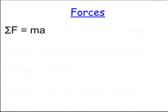That sigma symbol means 'the sum of,' so if we add up all our forces, it is always equal to mass times acceleration. One force that we have on every single object is the force of gravity. It doesn't matter where the object is — if it's sitting on a table or up in the air — it has the force of gravity going down toward the center of the earth, and that's mass times gravity.